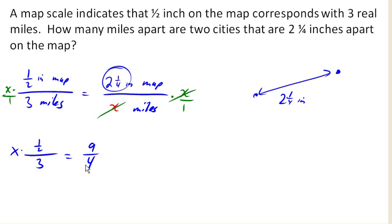We could either go ahead and divide 1 half by 3, or I'm gonna go ahead and multiply both sides of my equation by 3 over 1. That way, I can just get my 3 to reduce. And so now I've got x times 1 half is equal to, what is that, 27 over 4.